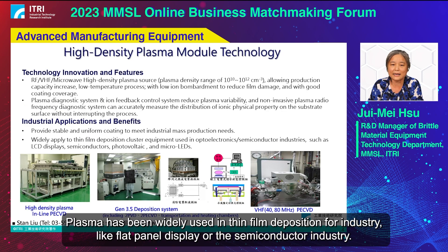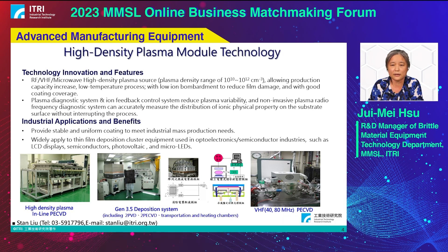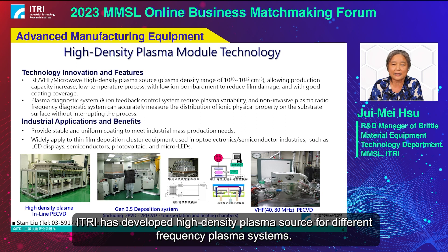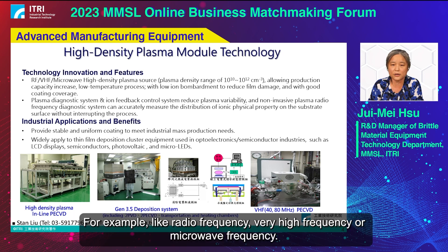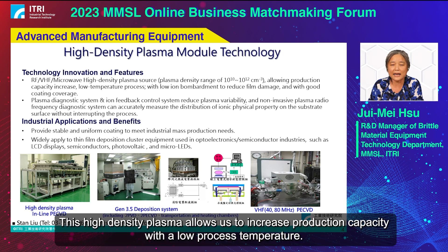Plasma has been widely used in thin film deposition for industries like flat panel display or semiconductor. E-tree has developed high density plasma sources for different frequency plasma systems. For example, radio frequency, very high frequency, or microwave frequency. This high density plasma allows us to increase production capacity with low process temperature.